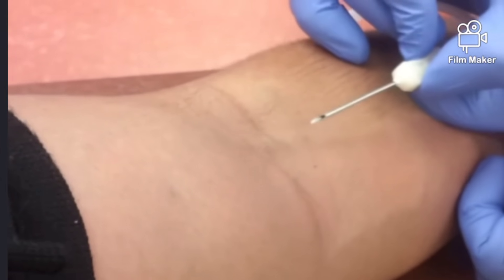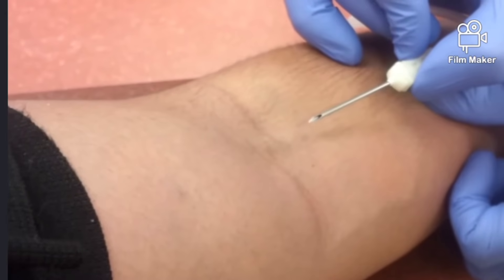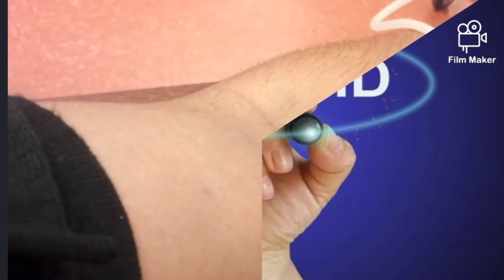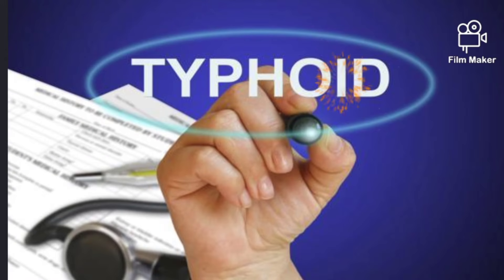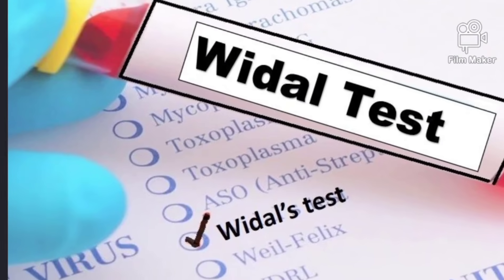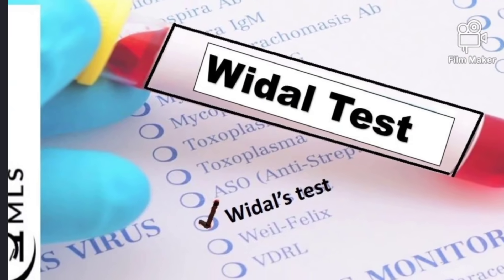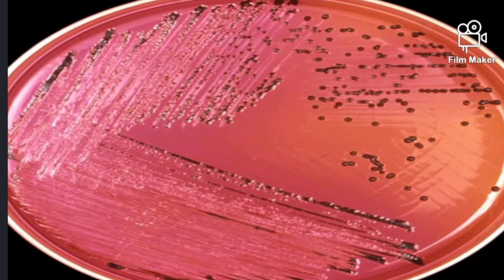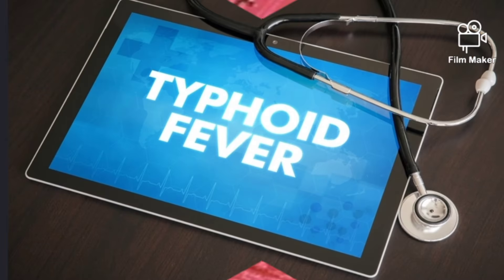The Widal test is done to diagnose typhoid. One thing we should remember is that the Widal test is not a confirmatory test for typhoid, because in certain viral infections there are also chances for the Widal test to be positive. So based only on the Widal test, don't confirm typhoid. Other tests like blood culture are generally done to confirm typhoid.